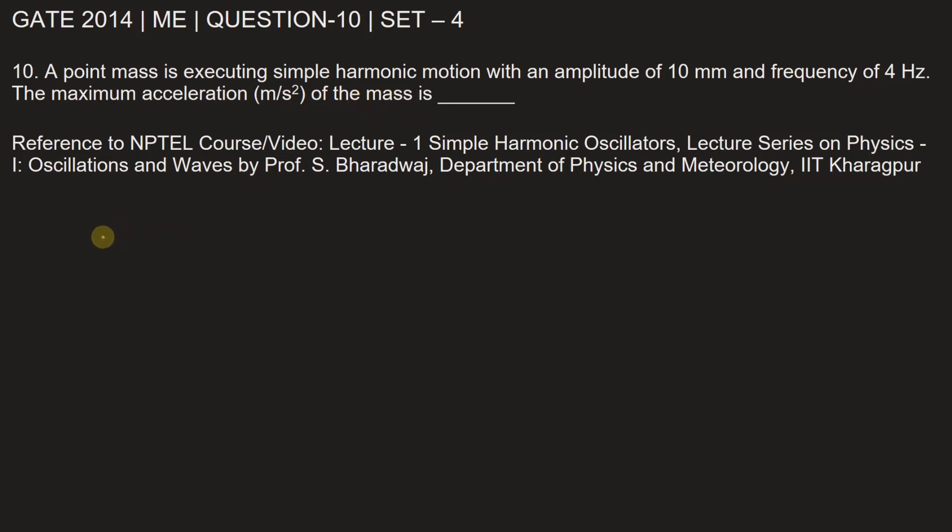We know that the displacement of simple harmonic motion is given by x equals A sin omega t, or it can also be written as A cos omega t. For this problem, let's consider A cos omega t, where A is the amplitude and omega is the angular velocity. This is the equation of displacement.